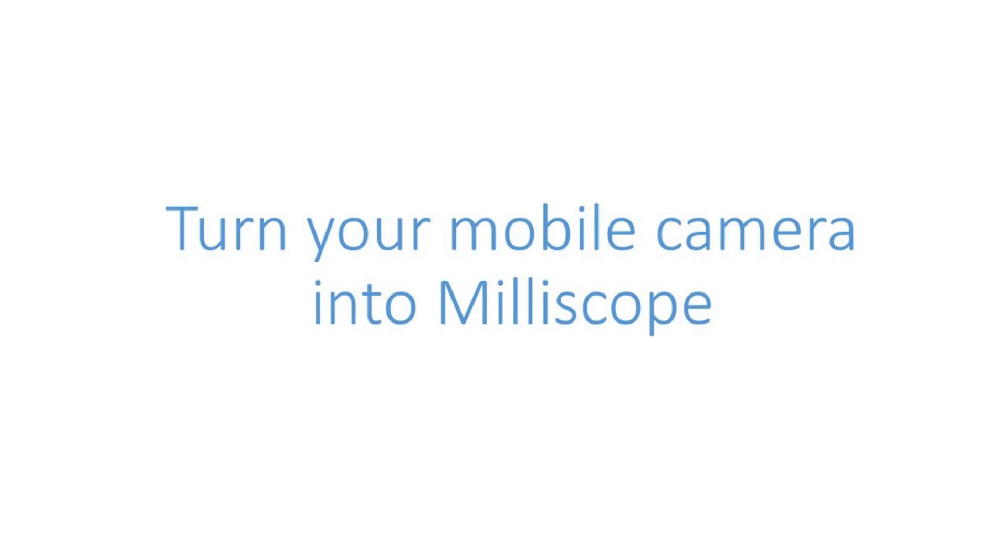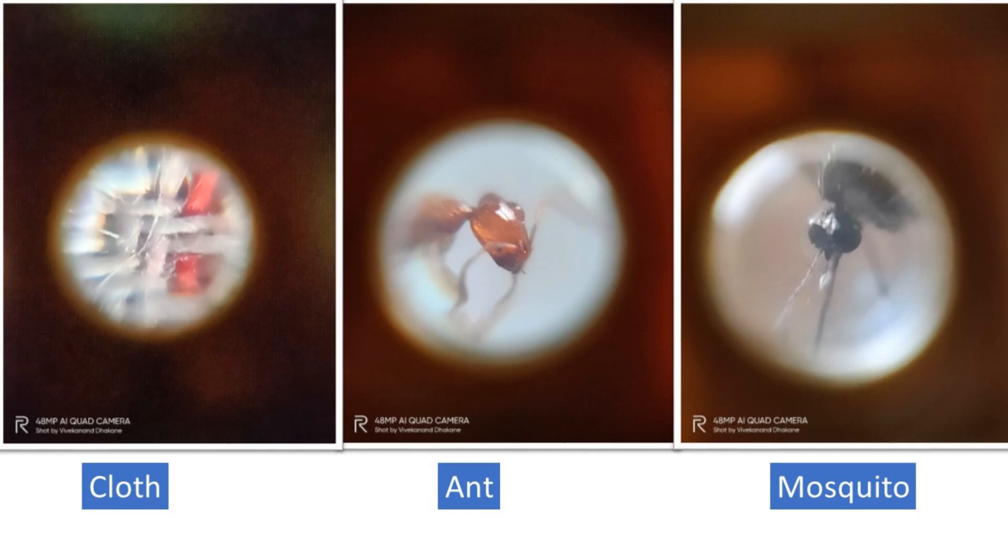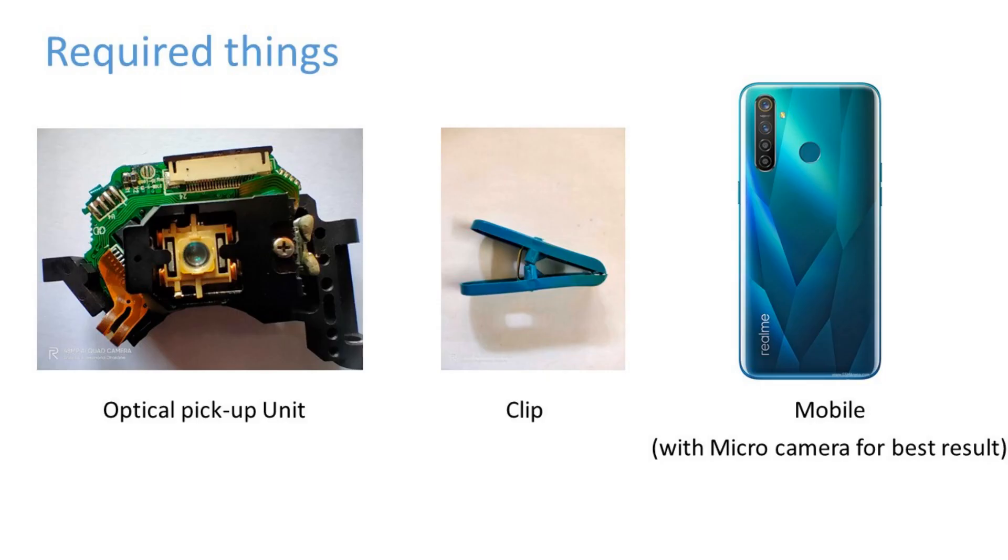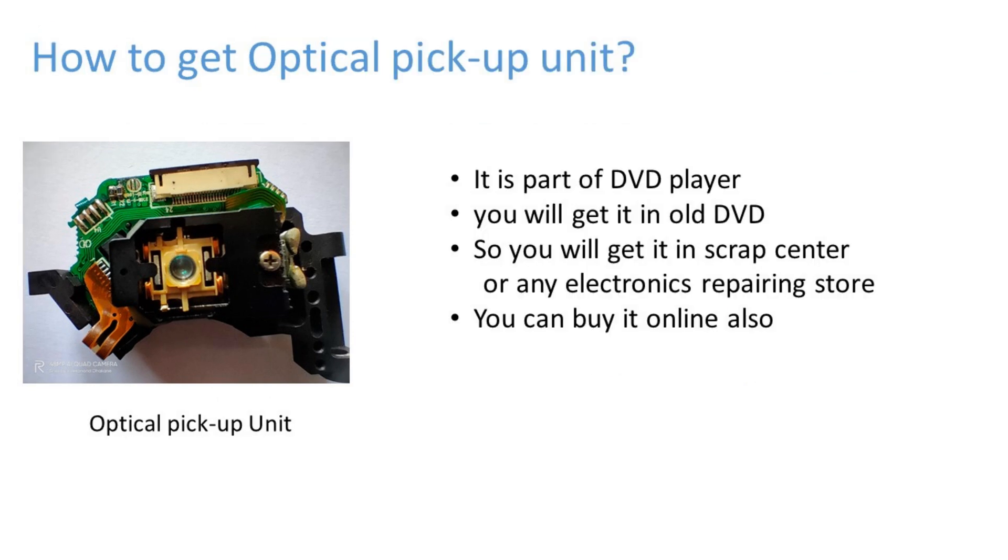Hi, in this video we are going to see how to turn our mobile camera into a milliscope. Using that, we can see very tiny objects. These are some photos I clicked using that. These are the required things to convert our mobile camera into a milliscope. First is the optical pickup unit. We will see how to get it. Next is a clip, this clip we use for hanging clothes. Then a mobile with micro camera gives best results.